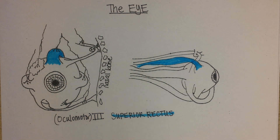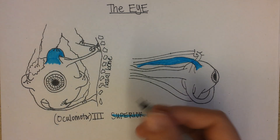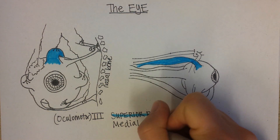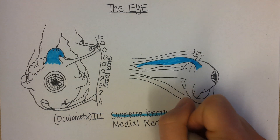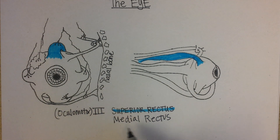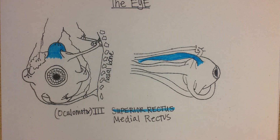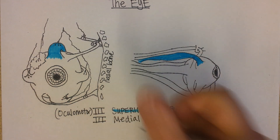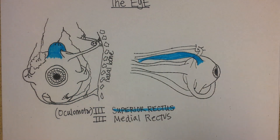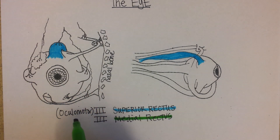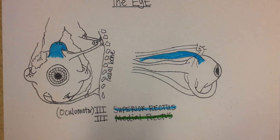Then there is a medial rectus. You can hear in the names where it will be located. Medial means it's on the medial side of the eye and rectus means straight. It is also controlled by the third cranial nerve, the oculomotor. Oculomotor means eye, motor means movement.